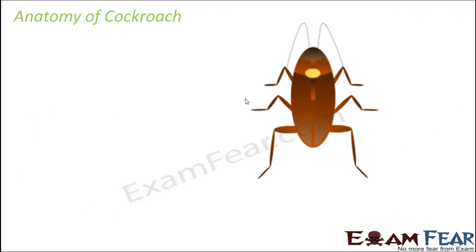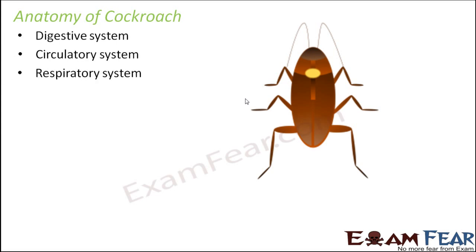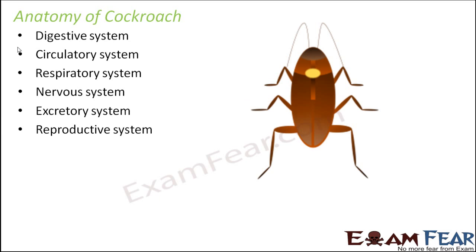With this we have discussed the morphology of cockroach. Now we will discuss anatomy — the internal structure of cockroach — covering all life processes: digestive system, circulatory system, respiratory system, nervous system, excretory system, and reproductive system. We will go through each system one by one and compare them with those in earthworm, so that we understand how they are similar or different. The goal is to study three quite different organisms to appreciate the variation in these various systems.